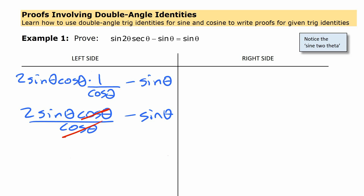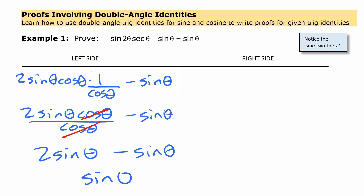The long and short of it is you're going to have 2 sine theta minus sine theta. You have to recognize that those are like terms — 2 of something minus 1 of something is just one of those things — which gives you sine theta, equal to what we started it to be. Needless to say, it would be a lot harder to start with the simple side and get it complicated up to looking like the other side.